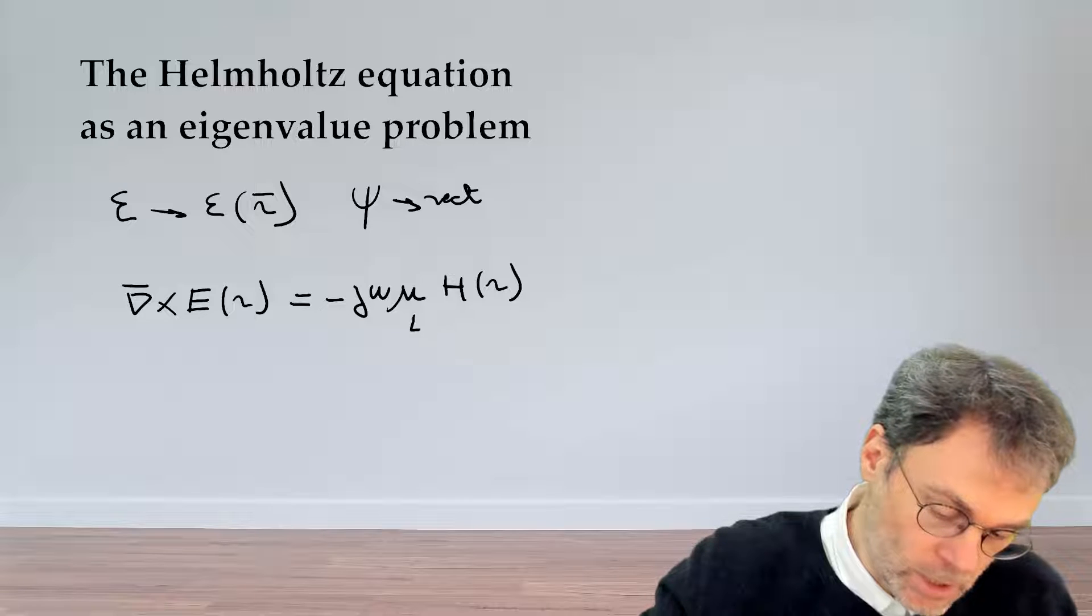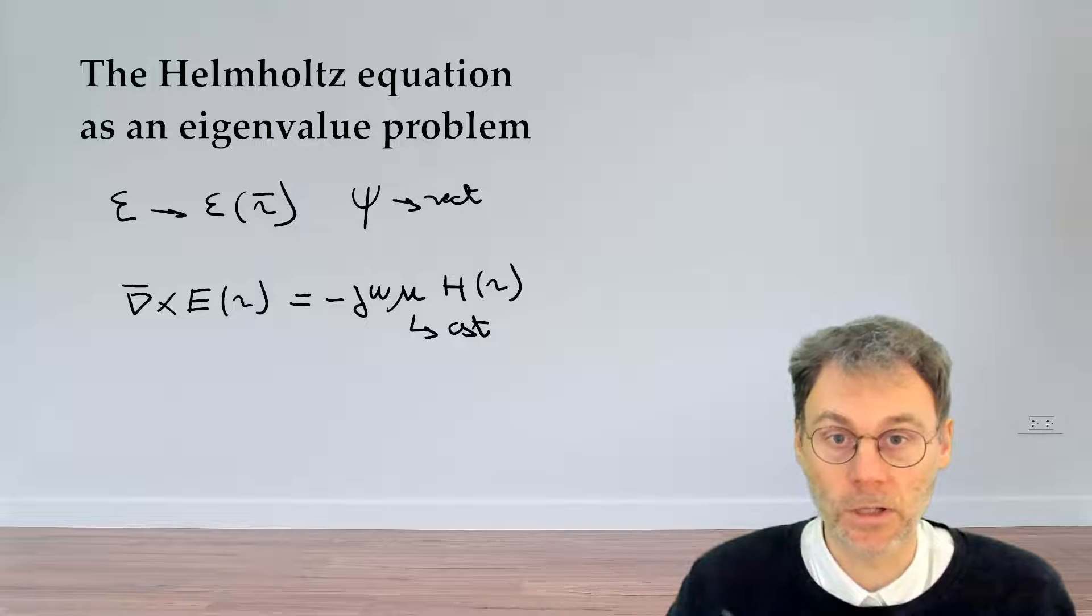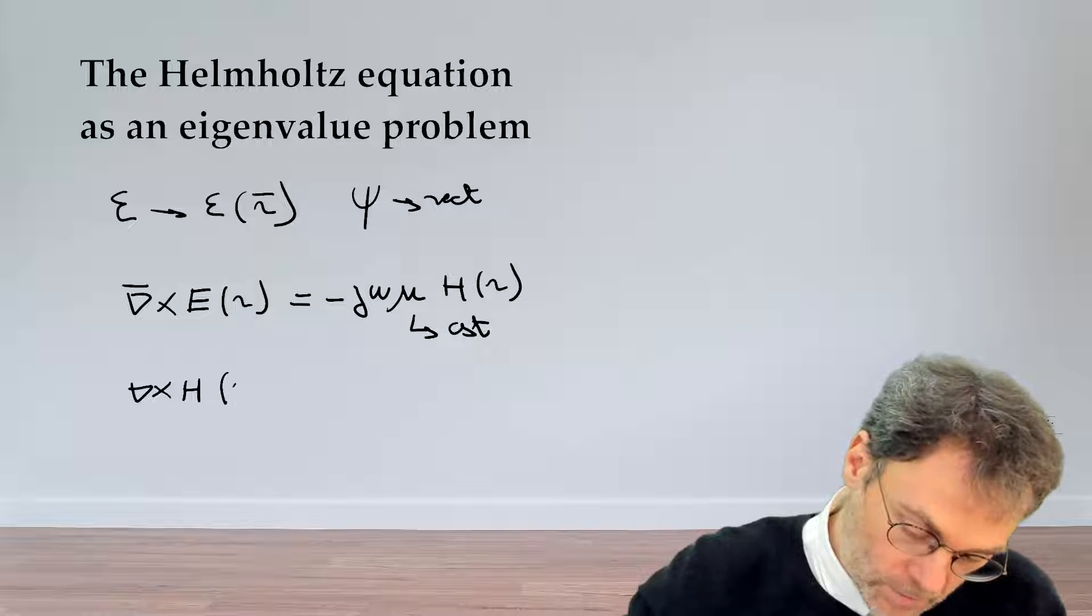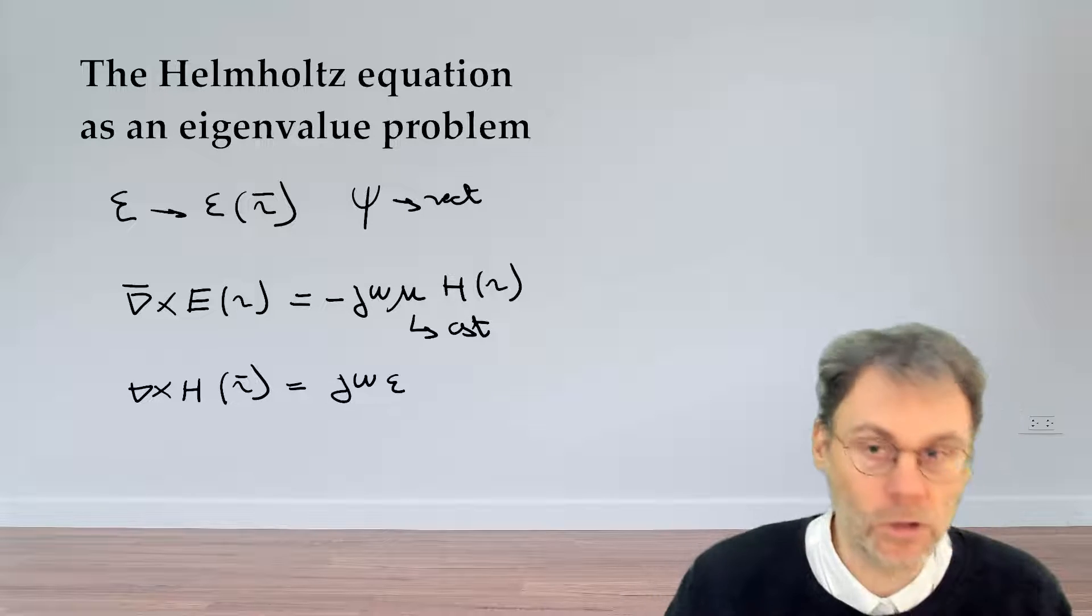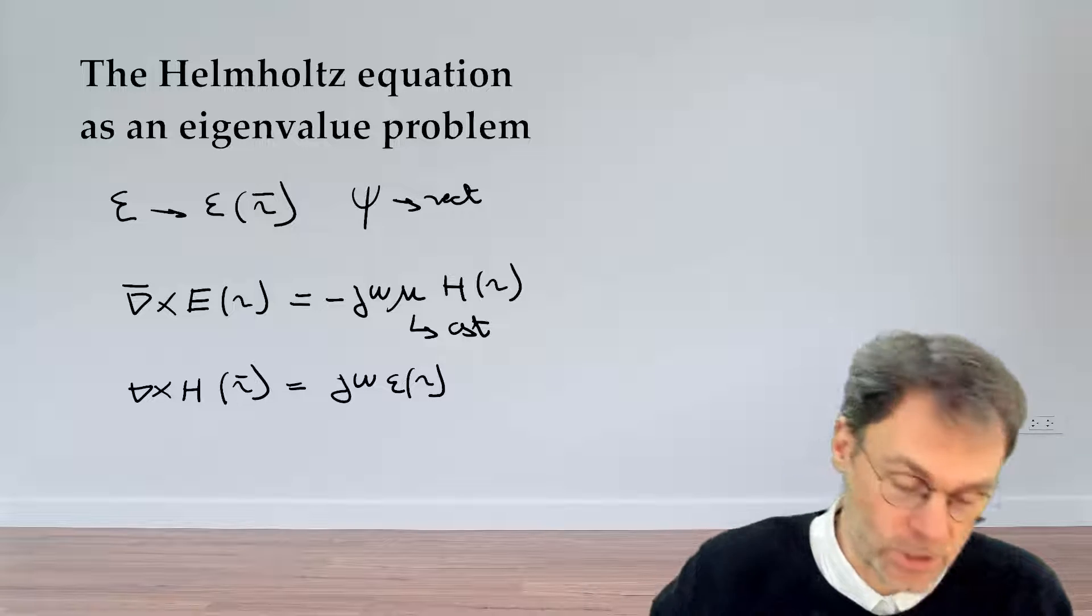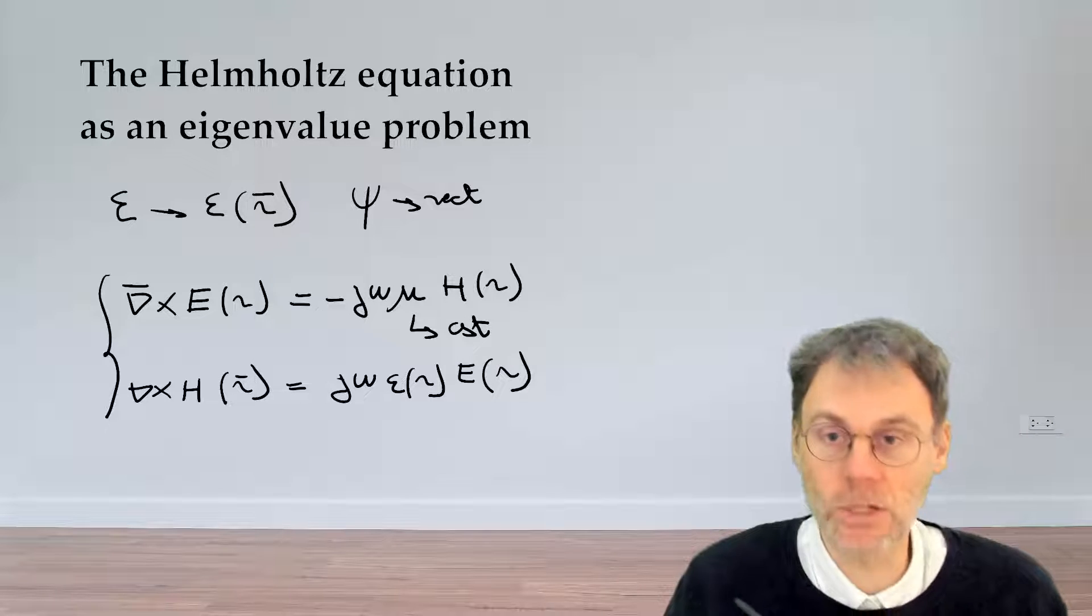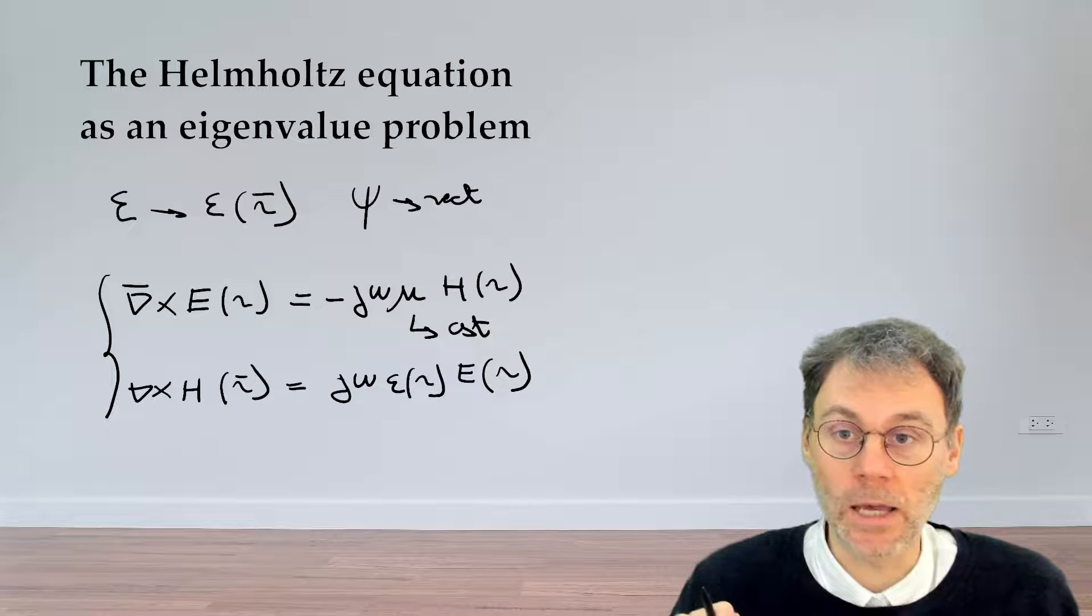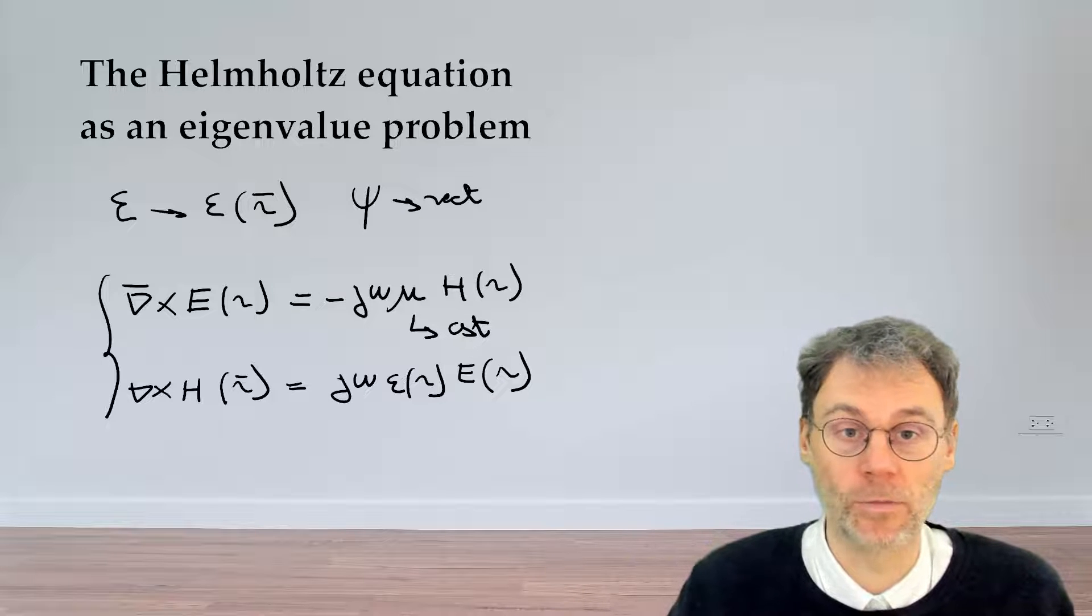And what we're going to do here is say that mu is a boring constant. So we're not going to look at special magnetic materials here. And then the second equation is that the curl of the magnetic field is j omega epsilon. But here we need to be careful, epsilon is not a constant. Epsilon can vary as a function of the position times the electric vectorial field as a function of the position. So these will be the two variables that we need to look at. So what I suggest you do now is pause the video and try to eliminate the electric fields from these equations.